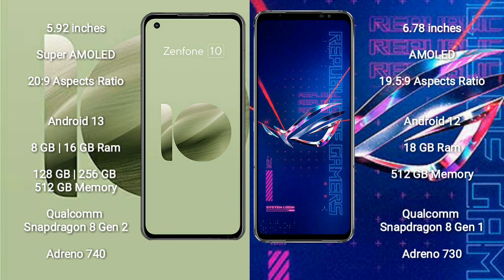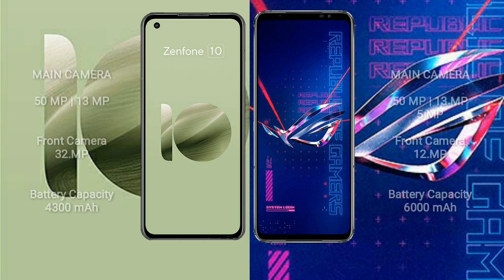The Asus Zenfone 10 features a Qualcomm Snapdragon 8 Gen 2 processor with Adreno 740 GPU. The Asus ROG Phone 6 Pro comes with 18 GB RAM, 512 GB internal storage, a Qualcomm Snapdragon 8 Gen Plus 1 processor, and Adreno 730 GPU.